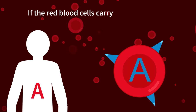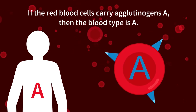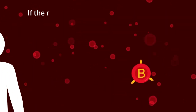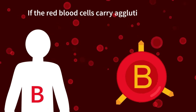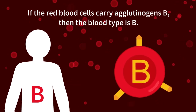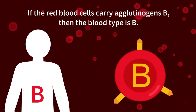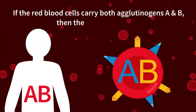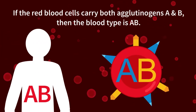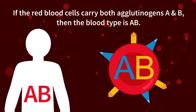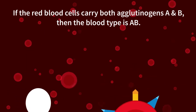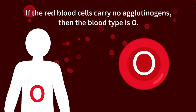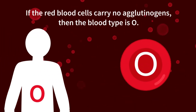If the red blood cells carry agglutinogens A, then the blood type is A. If the red blood cells carry agglutinogens B, then the blood type is B. If the red blood cells carry both agglutinogens A and B, then the blood type is AB. If the red blood cells carry no agglutinogens, then the blood type is O.